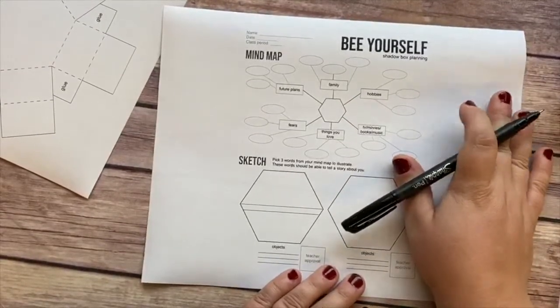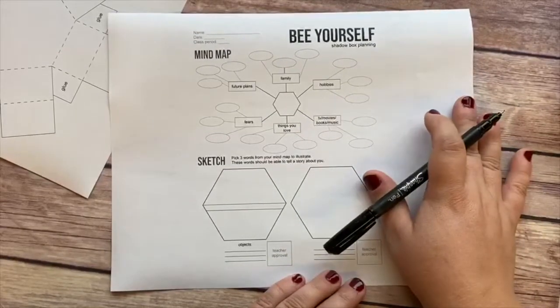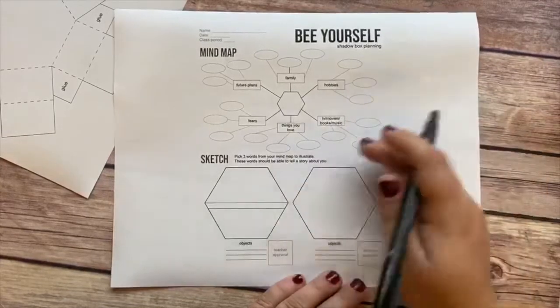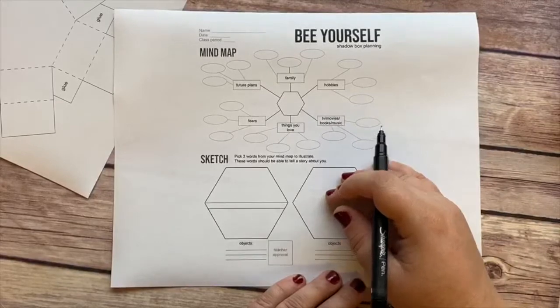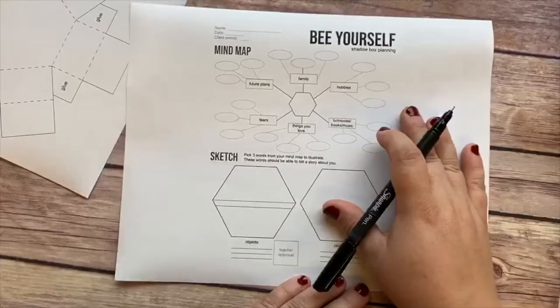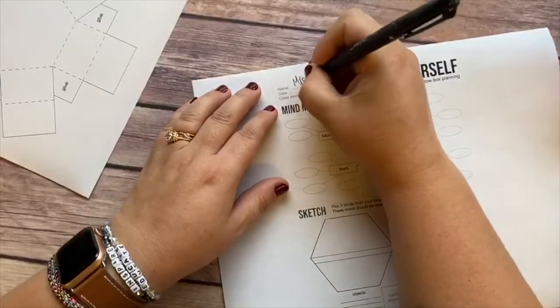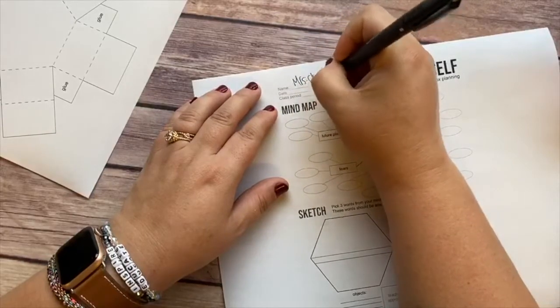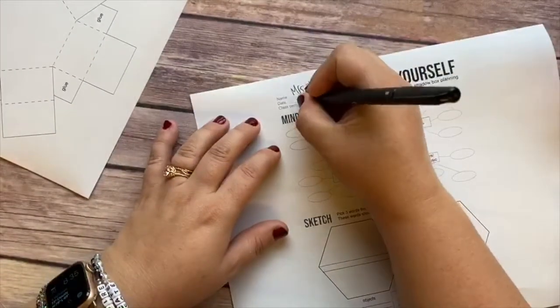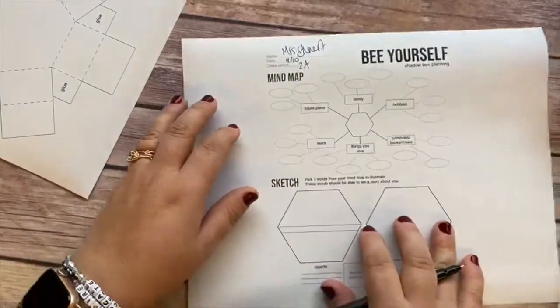I have printed it or put it into the assignment as a PDF for you to print, or you could complete this in a Google Draw form by inserting images through Google. You'll watch me do that in our Google Meet session. But the first thing you're going to do is add your name and then the date and what class we are, so it is the 10th and it is 2a here.